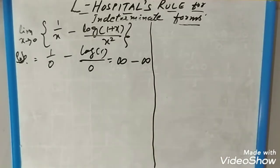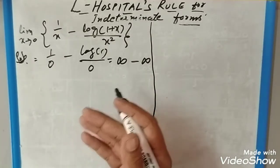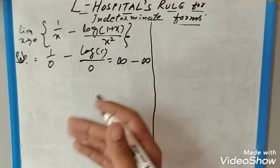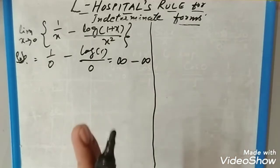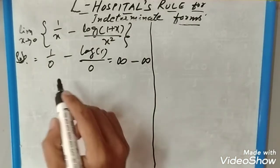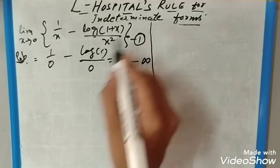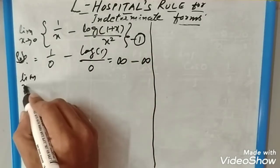It is in the form of infinity minus infinity. Let us change it into 0/0 form such that it will become very easy for us to apply L'Hospital's rules. To do this, in this type of cases, we always take the LCM. So let us take the LCM.